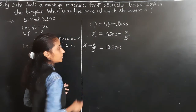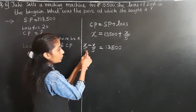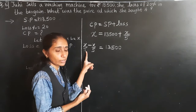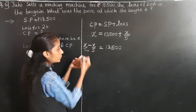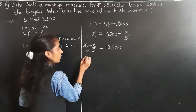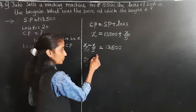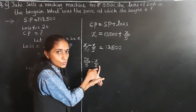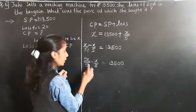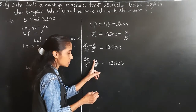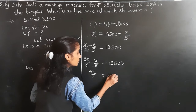Now making denominators equal — LCM is 5. So 5X upon 5 minus X upon 5 equals 13,500. Now 5X minus X is 4X — that's 5X minus 1X equals 4X. So 4X upon 5 equals 13,500.